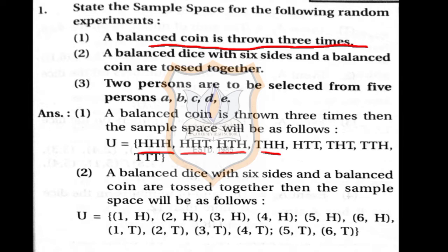You can also get two tails. Head on first and tail on the other two: H, T, T. Tail on first and third, head on second: T, H, T. Tails on the first two and head on third: T, T, H.